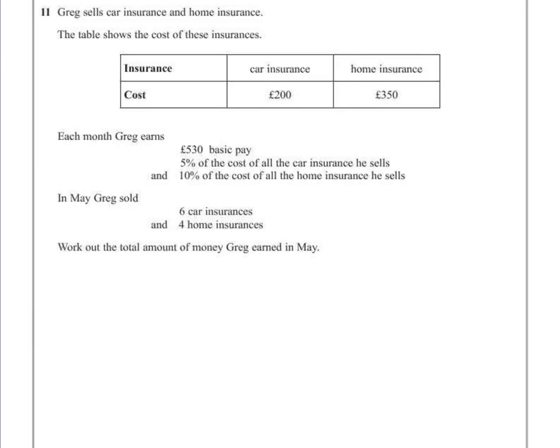Question 11. Greg sells car insurance and home insurance. The table shows the costs of these insurances. Each month, Greg earns £530 basic pay, 5% of the cost of all the car insurance he sells, and 10% of the cost of all the home insurance he sells. In May, Greg sold 6 car insurances and 4 home insurances. Work out the total amount of money Greg earned in May.